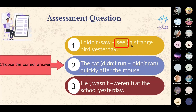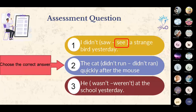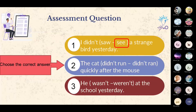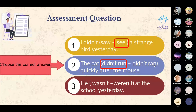الجملة الثانية: The cat didn't __ quickly after the mouse — run or ran? القطة لم تركض بسرعة خلف الفأرة. الإجابة: run — الأولى وليس ran. لأن أصل الفعل run يركض، أما ran فهي الماضي الشاذ لـ run.